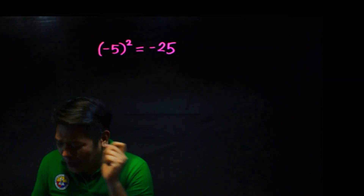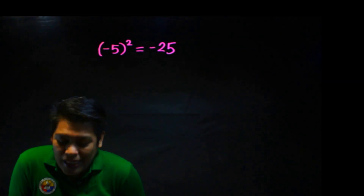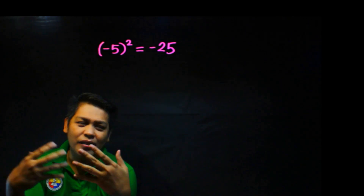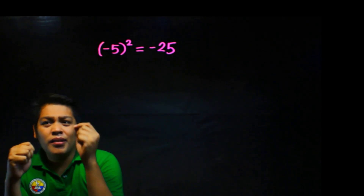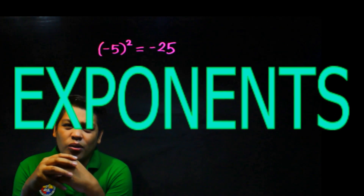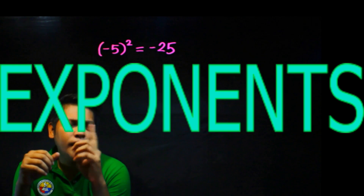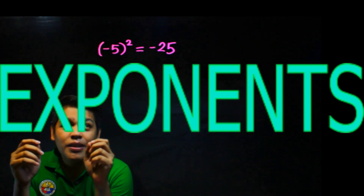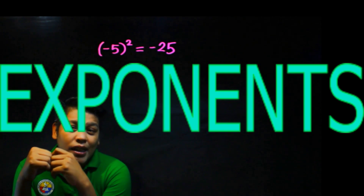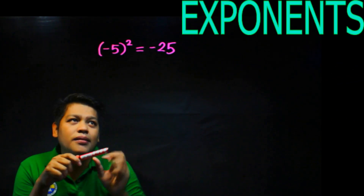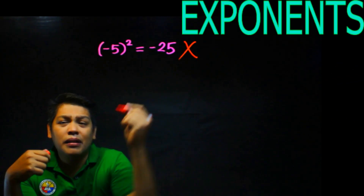So let's start! The most common mistake that my students make, and why others have difficulty, is the proper use of exponents or powers. For example, negative 5 squared — they answer negative 25, which is wrong.